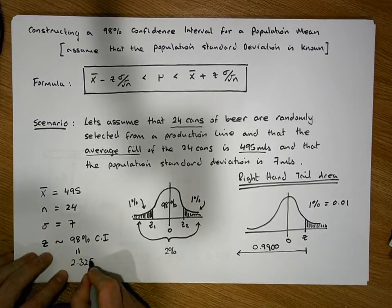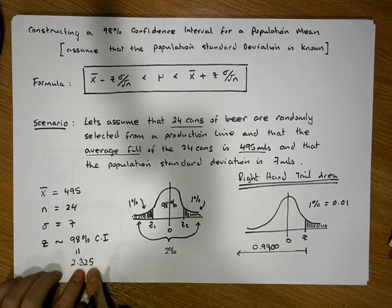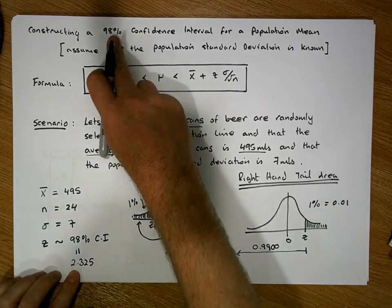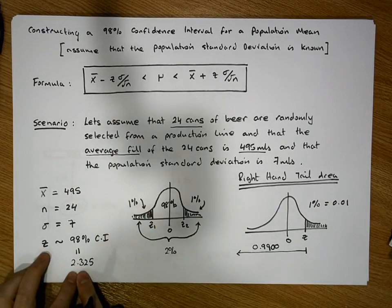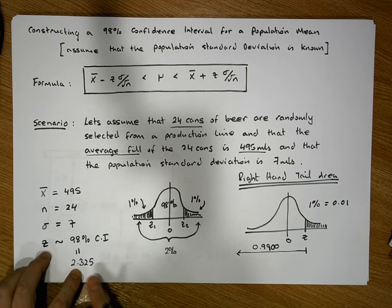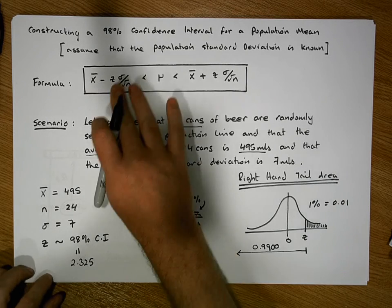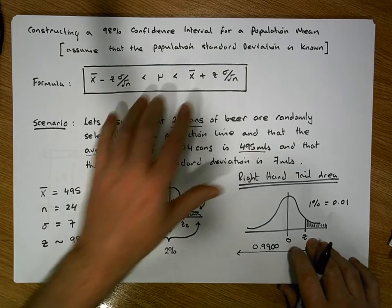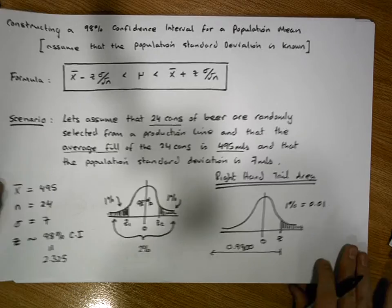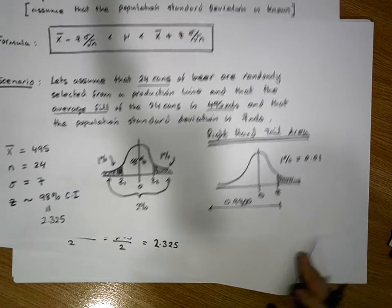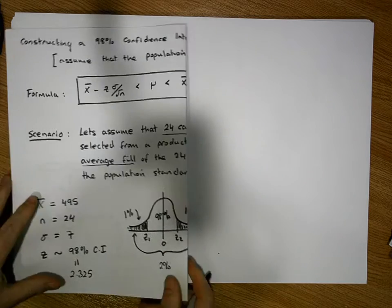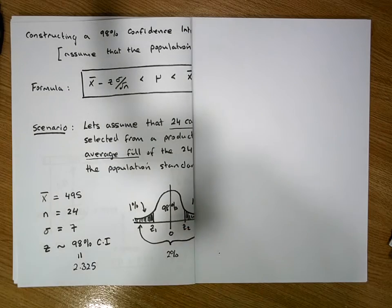So the z-score is 2.325, which in some cases is reported as 2.33. For a 98% confidence interval, the z-score is typically reported as 2.33. Now we have all of our parameters, so we can substitute them into our formula to calculate this 98% confidence interval.